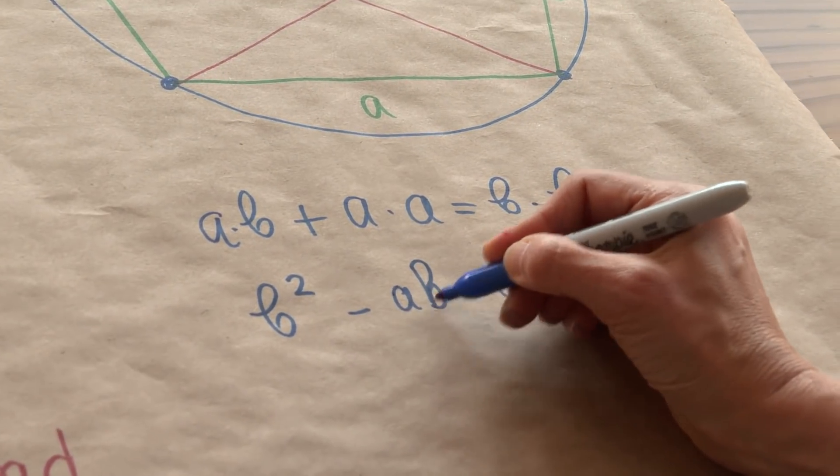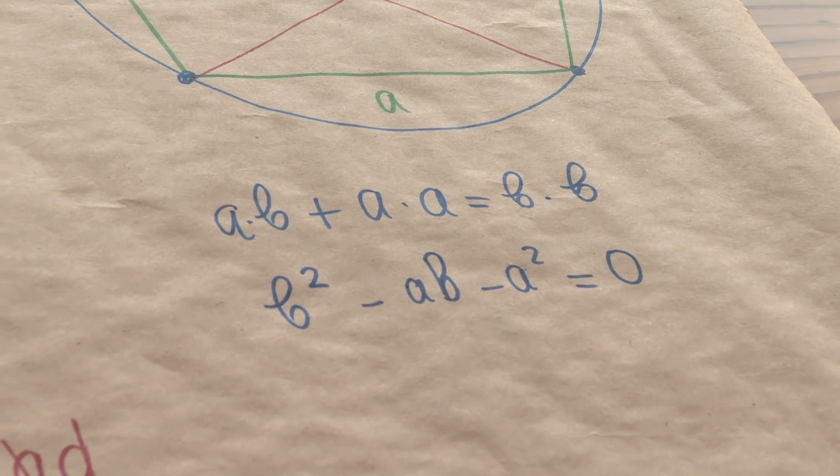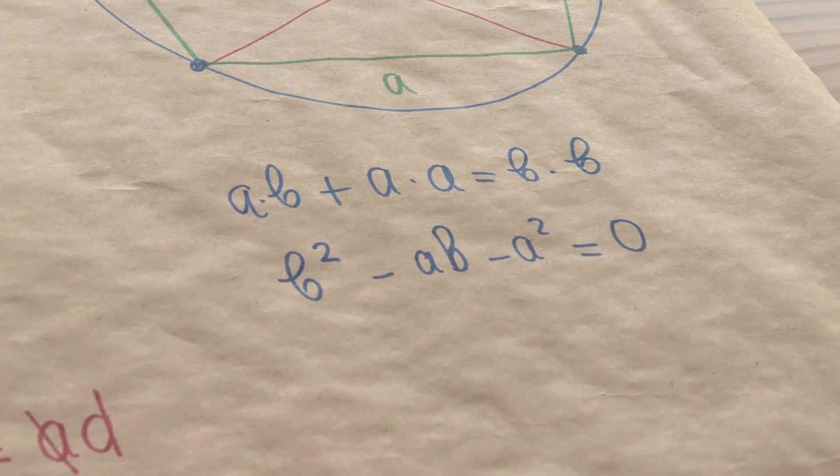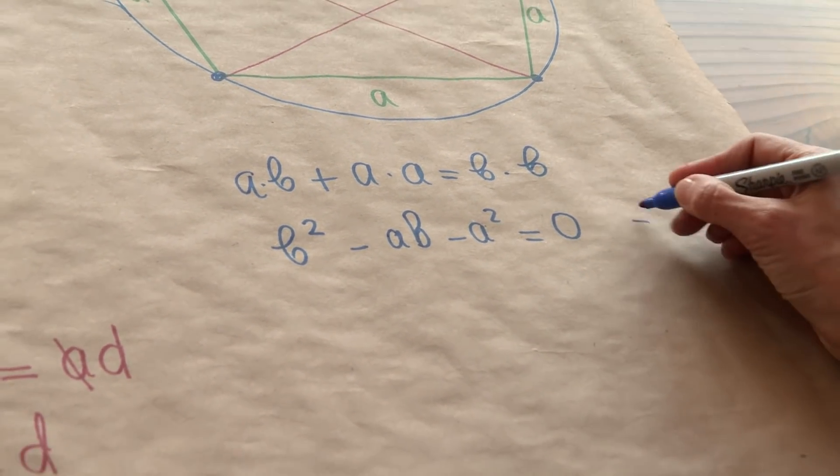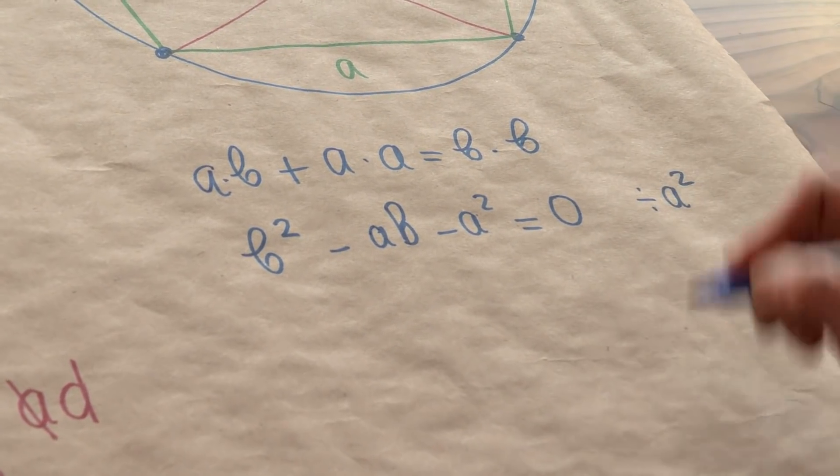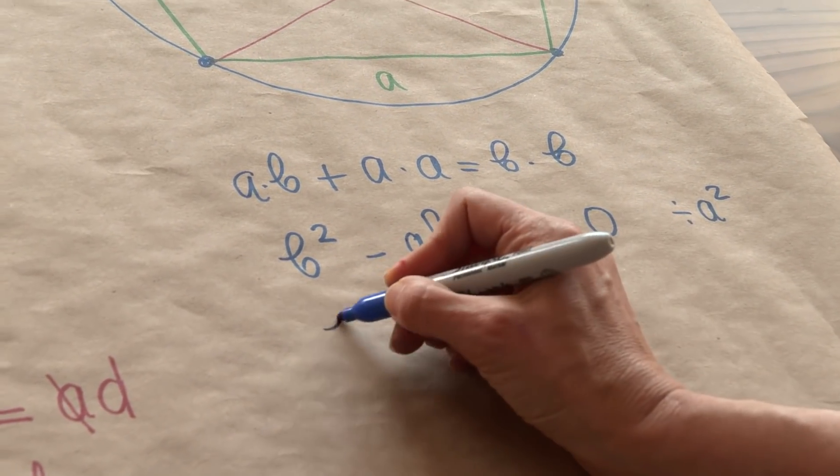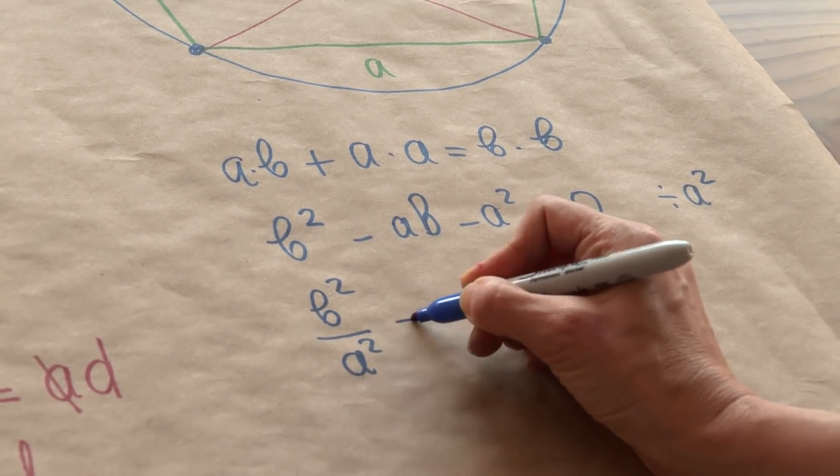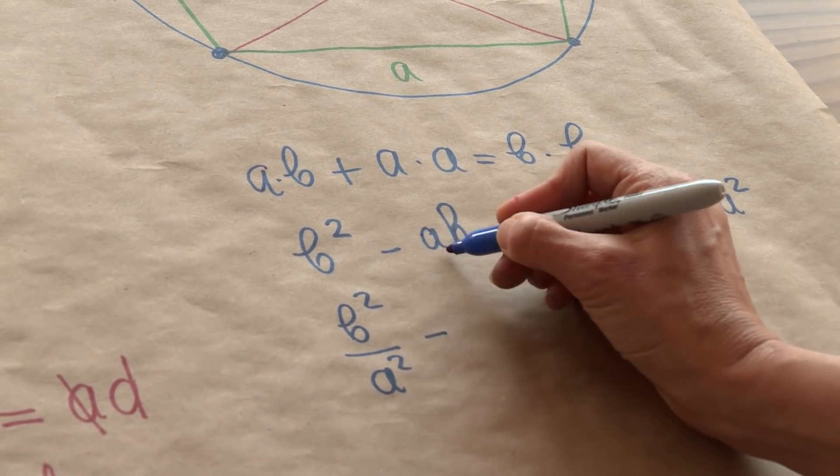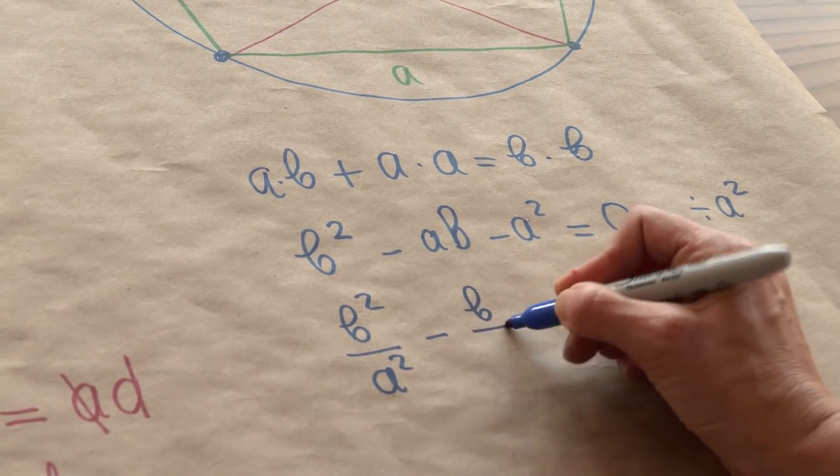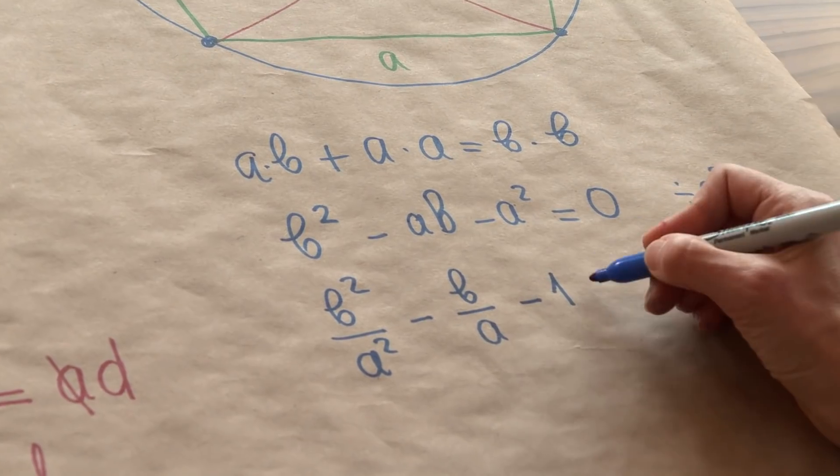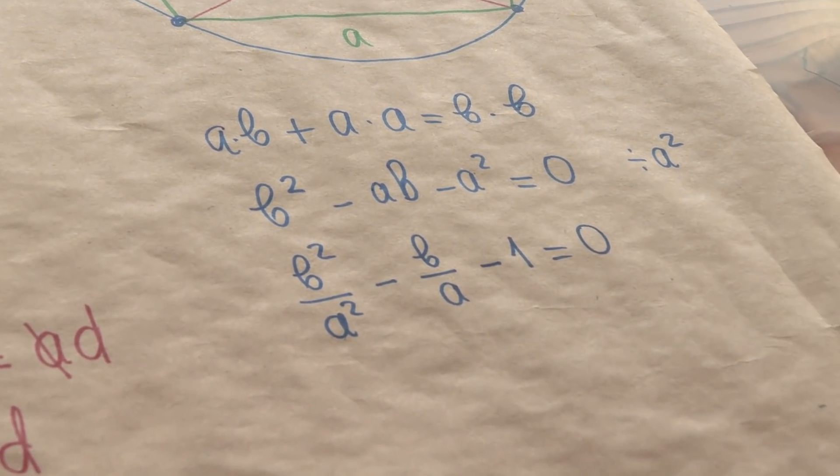B squared minus AB minus A squared is equal to zero. All right, any mathematician looking at this says, this is a homogeneous equation, I can do miracles with it. In other words, let's just divide by A squared and see what that would give us. So B squared over A squared minus, now one of those A's will cancel, B over A minus one, because A squared divided by A squared is one, and that's zero.